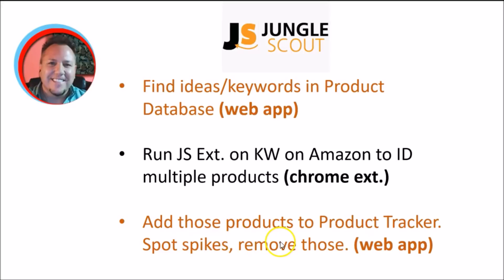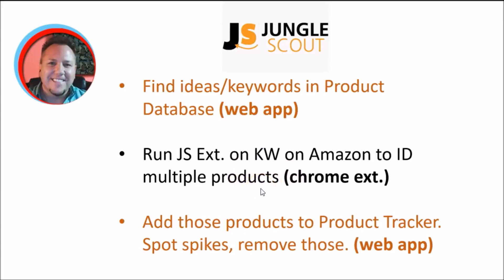You can then remove those spiking products because you know they're just temporary trends. So to summarize: find ideas and keywords in the product database in the web app, run the Jungle Scout Chrome extension on the Amazon site to identify multiple products, then bring those into the product tracker in the web app. It will help you spot anomalies and remove those as needed, so that you have a solid set of products from which to choose.